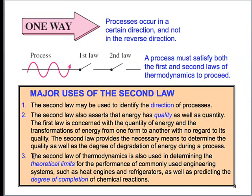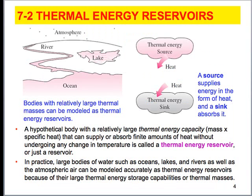We've described the first two properties, and the third one — which we're going to spend most of this presentation on — deals with the fact that there are theoretical limits to the performance of something to occur. For example, a heat engine is going to have a certain limit to how it can operate between both a hot and a cold reservoir, and let me go ahead and define that term.